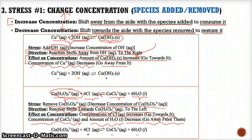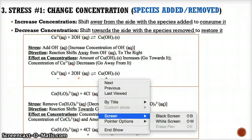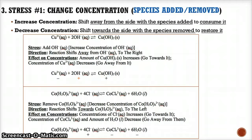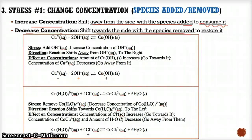So that's all you have to do: circle the species you're focusing on, decide which direction you're going, then know what happens to the concentrations. If you increase the concentration of a species, shift away from it since you have too much — consume it and bring it back down to equilibrium. If you decrease the concentration, there's too little, so shift towards the side with the species removed to produce more and restore it back up to equilibrium levels.